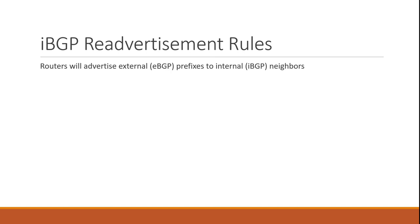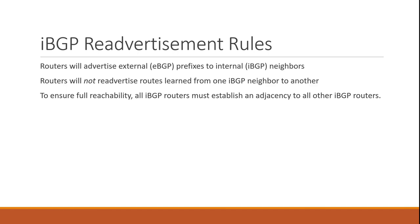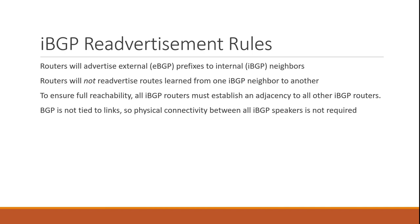To summarize: routers will advertise eBGP prefixes to IBGP neighbors, but routers will not advertise routes they've learned from one IBGP neighbor to another. The downside is that we now need to make sure eBGP prefixes are learned by all routers — if we have three routers in a row, the middle router wouldn't re-advertise prefixes to the last router. To work around this, network administrators must ensure there's a BGP session between every BGP-speaking router in the autonomous system — a full mesh of BGP sessions between all BGP speakers in an AS. Keep in mind that BGP runs on top of TCP, so wherever TCP can go, BGP can go too, meaning the full mesh of sessions doesn't also require a full mesh of physical connections.